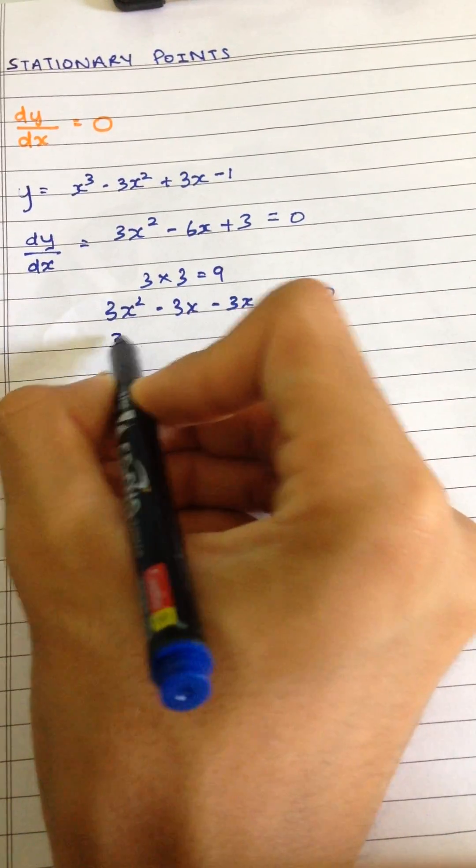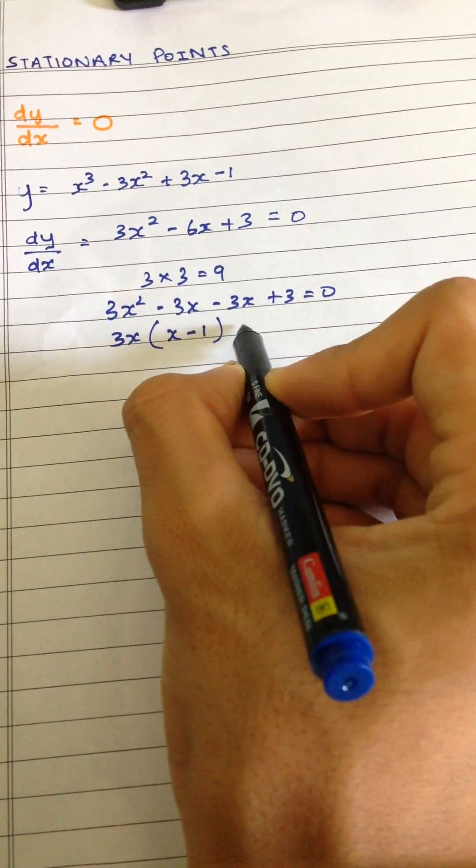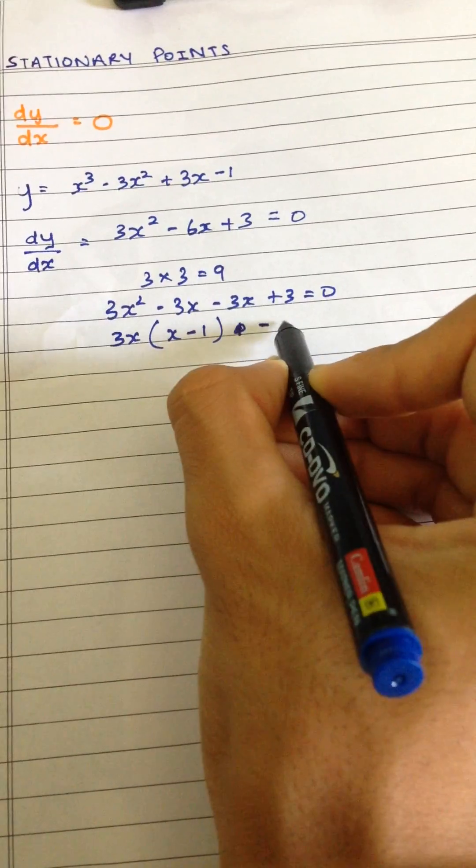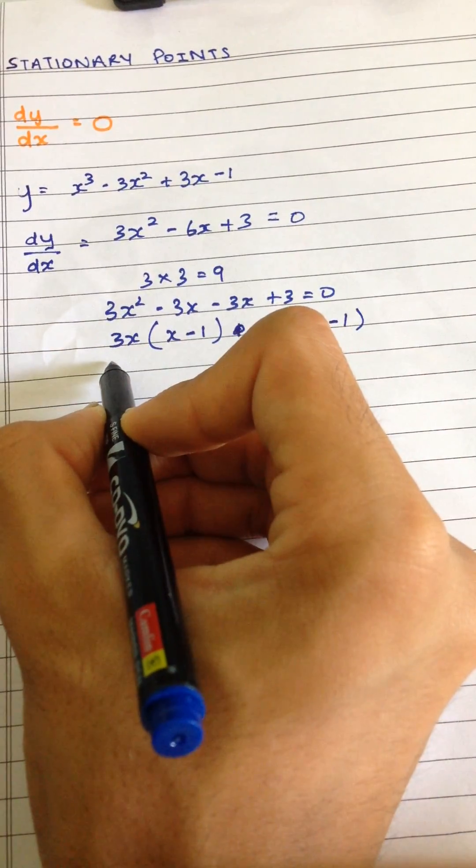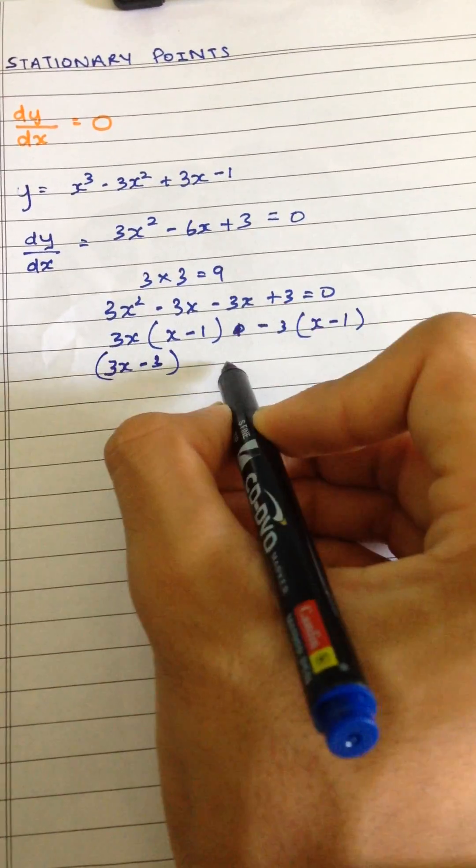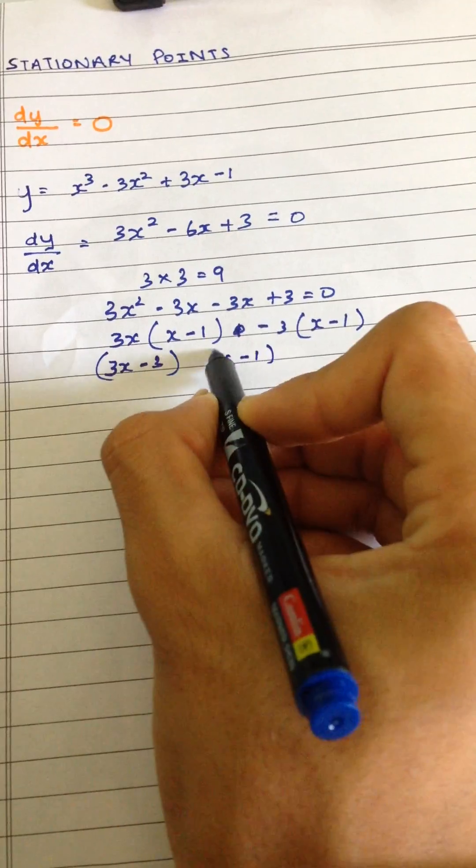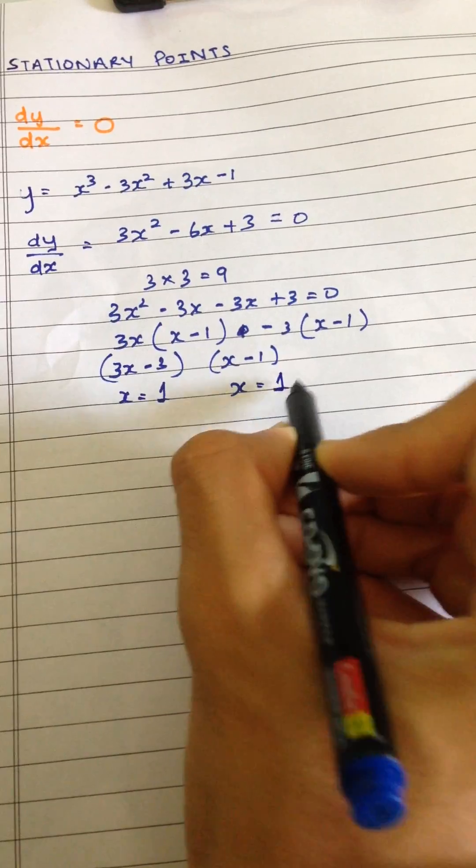So factorize it now, 3x multiplied by x minus 1, minus 3 multiplied by x minus 1. So what we get is 3x minus 3 and x minus 1. So here x is equal to 1 and here also x is equal to 1.